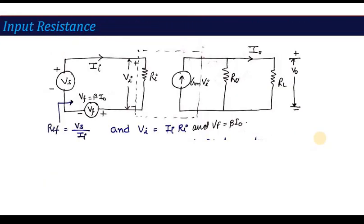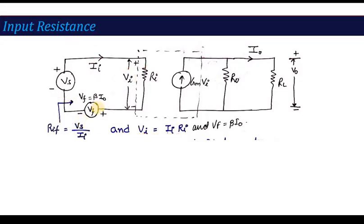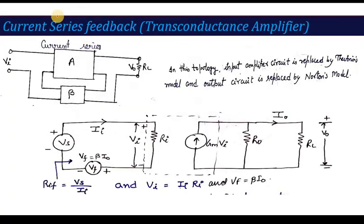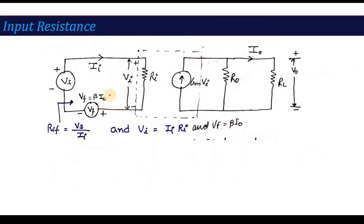For input resistance analysis, the voltage across the input is vi = ii*ri. Input resistance is defined as vs upon ii. There is one important difference from the voltage series case: because this is a current series configuration, the feedback voltage vf is equal to beta*i0, not beta*v0 as before. This is the key change here.